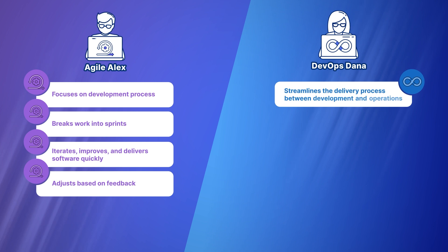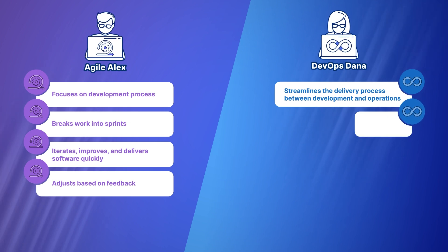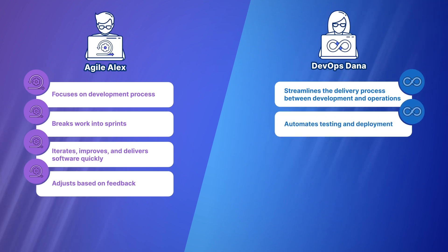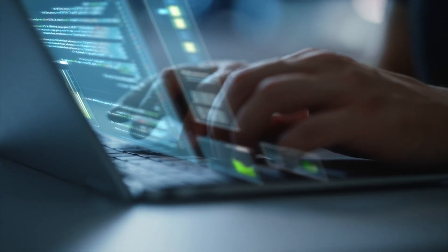DevOps Dana, on the other hand, streamlines the software delivery and deployment process between the development and operations teams. While Alex works in sprints, she automates the testing and deployment of his code so it gets to users faster. Alex writes the tests, and Dana automates them. Time is important to both of them — time for delivery, time for resolution — all of this makes a difference.